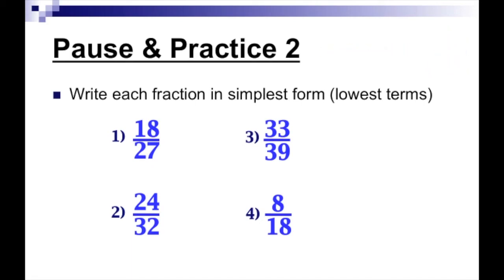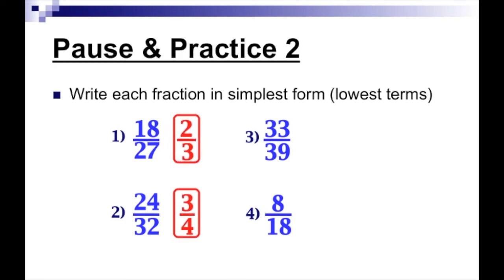Let's go over our answers. We have to write each fraction in simplest form, or lowest terms — remember those terms mean the same thing. We have to make sure we're not just using a common factor to reduce; we have to get it in simplest form. For number one, two-thirds. Number two, three-fourths. Number three, eleven-thirteenths. And number four, four-ninths.